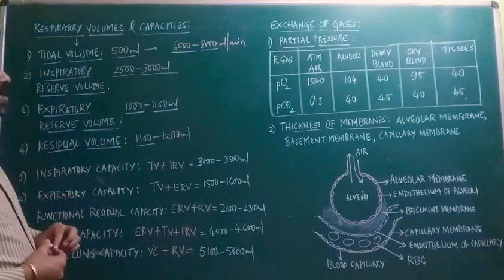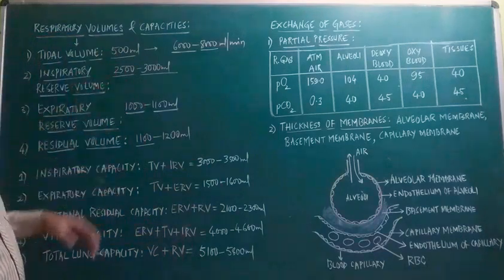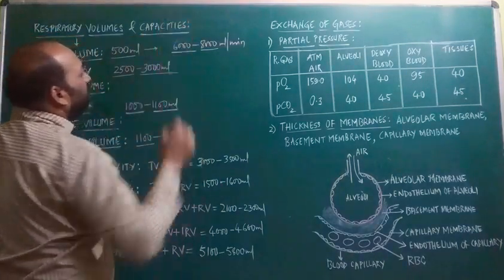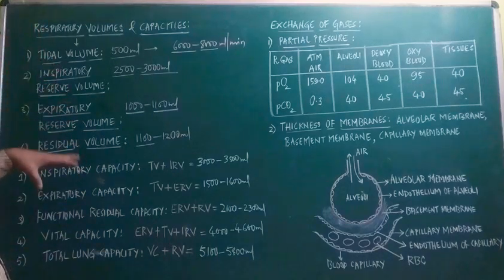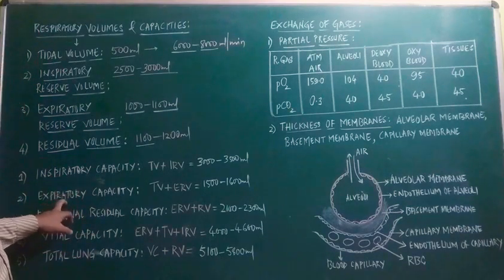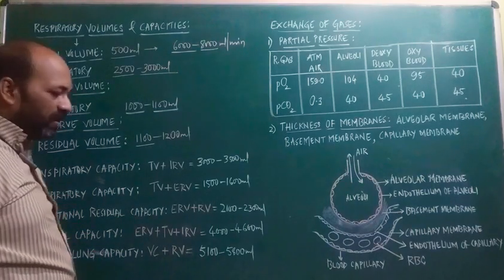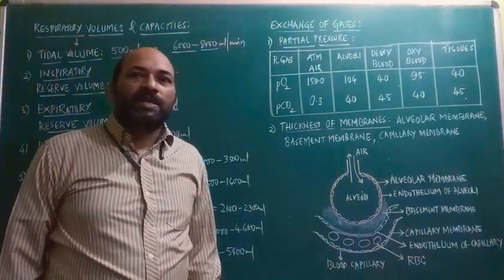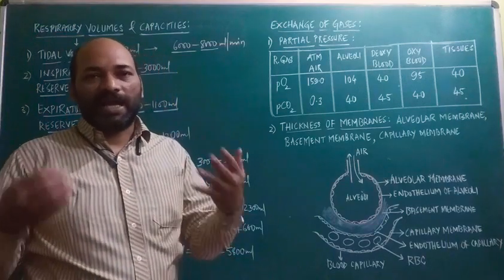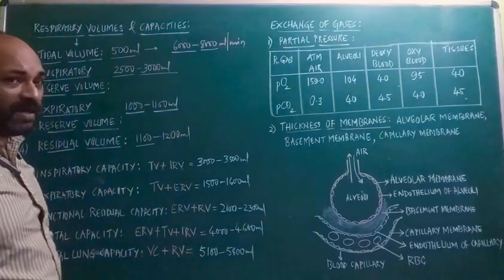This is all about respiratory volumes. When we add up the respiratory volumes, we get respiratory capacities. There are five different types: inspiratory capacity, expiratory capacity, functional residual capacity, vital capacity, and total lung capacity. Respiratory capacities are obtained by adding up the respiratory volumes.